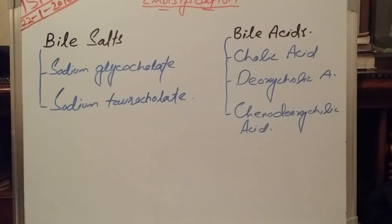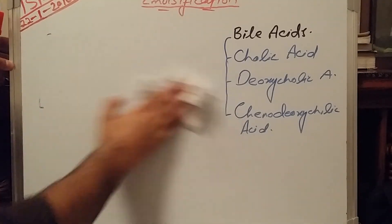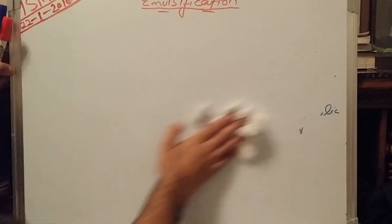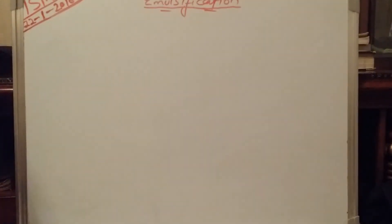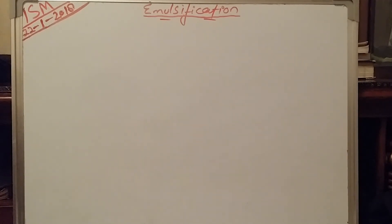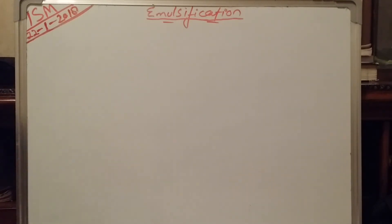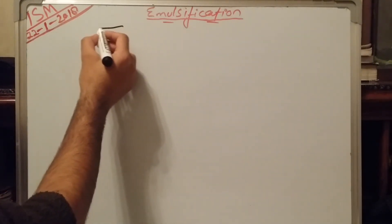These are the bile salts and bile acids which help in the process of emulsification of fat droplets and absorption — they help in absorption of fatty acids. Let us go through a simple point regarding the bile acids. Before this, I will draw something about bile acid.